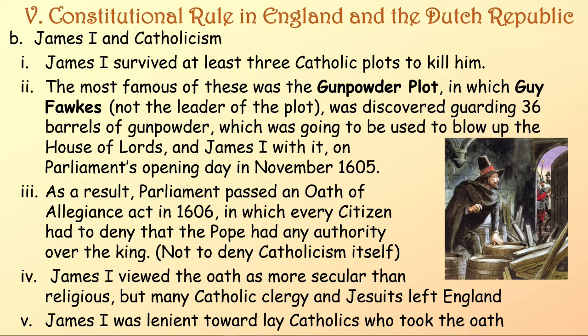James I survived at least three Catholic plots to kill him. The most famous was the Gunpowder Plot, in which Guy Fawkes — not the leader of the plot — was discovered guarding 36 barrels of gunpowder intended to blow up the House of Lords and King James on Parliament's opening day in November 1605. As a result, Parliament passed an Oath of Allegiance Act in 1606, in which every citizen had to deny that the Pope had any authority over the King. James viewed the oath as more secular than religious, but many Catholic clergy and Jesuits left England rather than take it. James I was lenient toward lay Catholics who did take the oath.